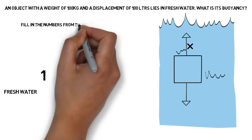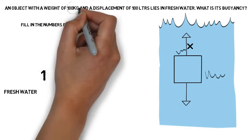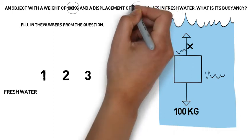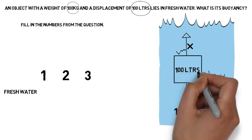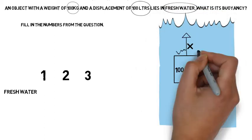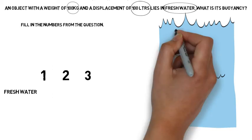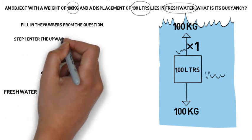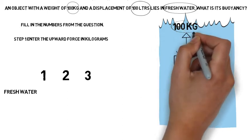Once we have the basic diagram drawn, we fill in the numbers from the question. The weight of the object — its downward force — goes under the down arrow: 100 kilograms. The volume of the object, 100 liters, goes in the middle. We are in fresh water, so one liter weighs one kilogram — put a 1 next to the multiplication sign. The calculation is 100 times 1, giving an upward force of 100 kilograms.